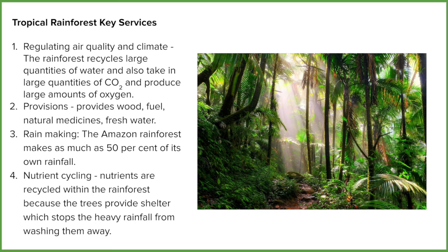The rainforest also provides resources for us: wood, fuel, natural medicines, fresh water. The medicines in our modern western medicines often come from the plants found in the Amazon rainforest and places like it. The rainforest also produces its own rain — 50% of the rainfall in the Amazon and its surrounding area is produced by the moisture from the transpiration of the trees. It also cycles nutrients; its roots hold the soil in place, putting nutrients back into the ground, which prevents it from turning into a desert.